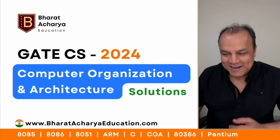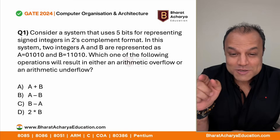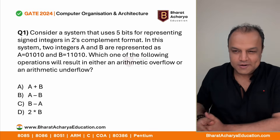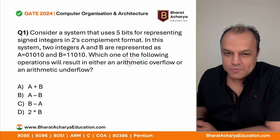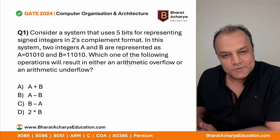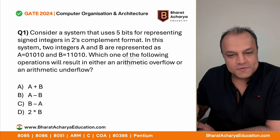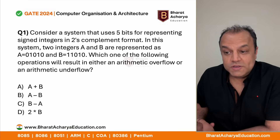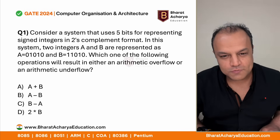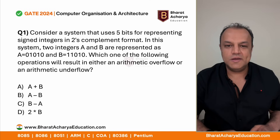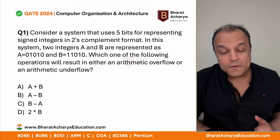Let's begin with the first question. It's a super simple question but see how verbose it is. Consider a system that uses five bits for representing signed numbers in two's complement form. Two integers A and B are represented as given values. Which one of the following operations will result in either an arithmetic overflow or underflow? They've given four operations - you want to calculate them and figure out which is overflow and which is underflow.